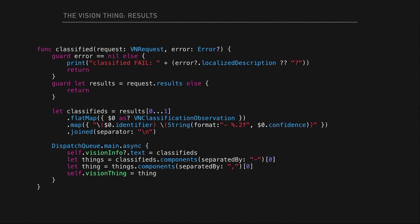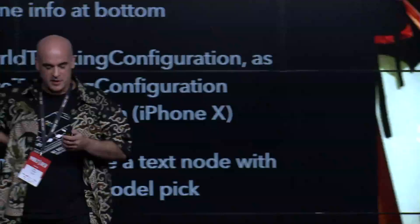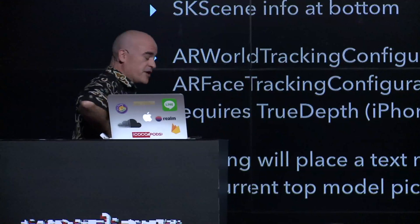We take the first result and make it the label — that Vision result you saw two slides ago. This is all on GitHub. In the demo you'll see the model at the top, and when you tap on something it creates a label of what it saw. Here in my apartment, I pointed it at my girlfriend's corner and it said 'shoe shop' — pretty smart.